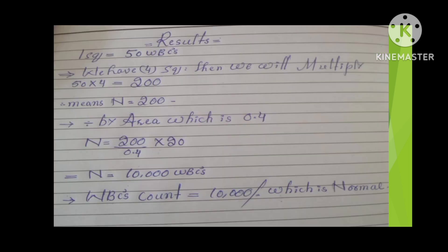This is our microscopic view, and we counted the WBCs. Our final result is 10,000, which is normal, obtained by applying the formula.